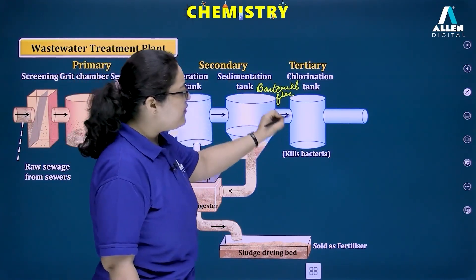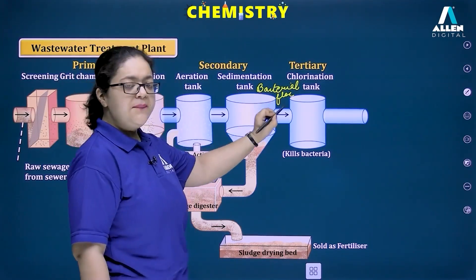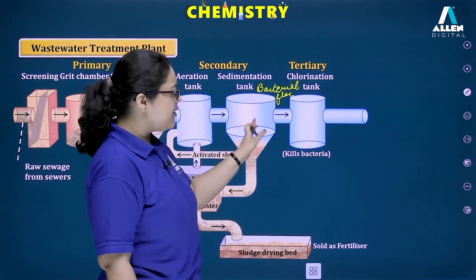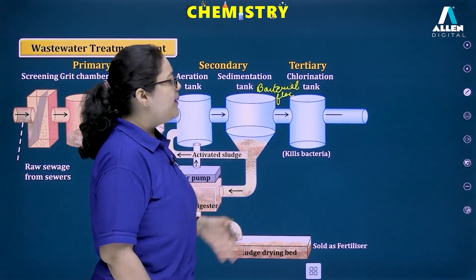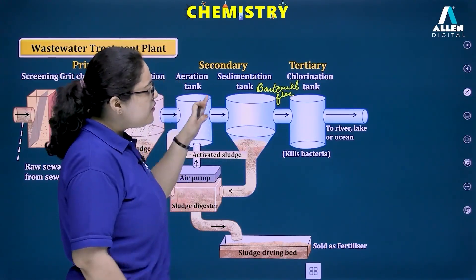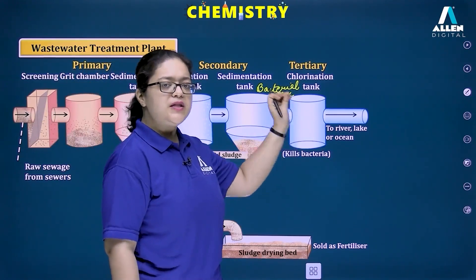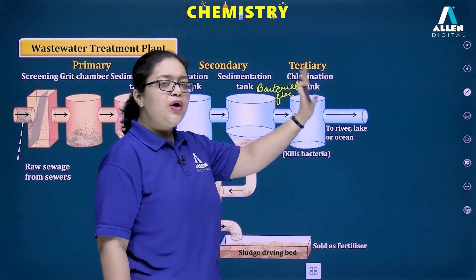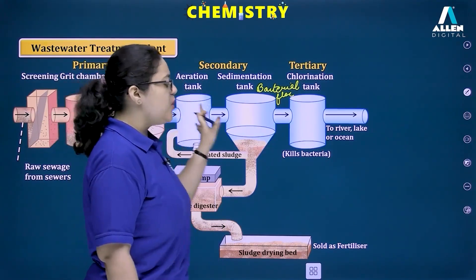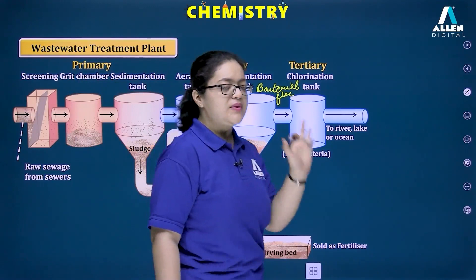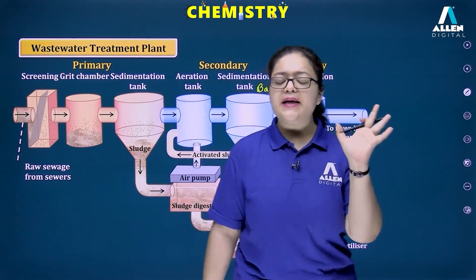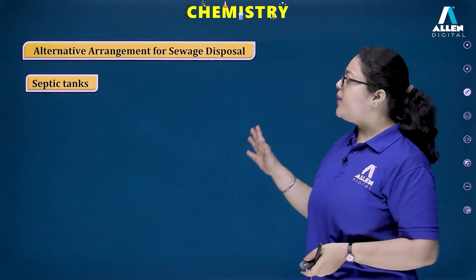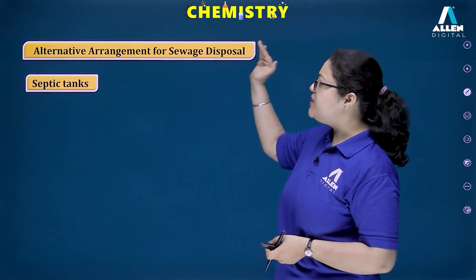In the tertiary process, the water enters a chlorination tank where chlorine is added and UV rays are applied to disinfect the water and kill bacteria. Finally, this treated water is ready to be disposed of into a river, lake, or ocean. The wastewater treatment process is now complete.